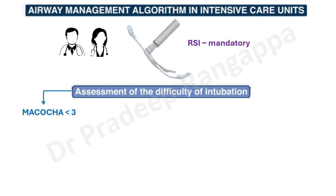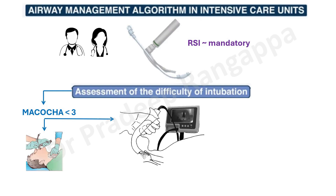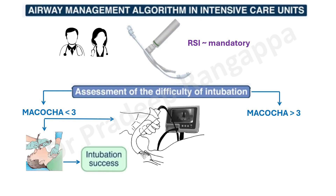The first step is to assess difficulty in intubation using the MACOCHA score — less than 3 or greater than 3. If Mallampati is 3 or 4, MACOCHA will automatically be greater than 3. If MACOCHA is less than 3 — no obesity, adequate neck mobility, adequate mouth opening — you proceed with standard preparation and use either direct laryngoscopy or video laryngoscopy, which is increasingly recommended. If MACOCHA is greater than 3, video laryngoscopy should be the first choice.